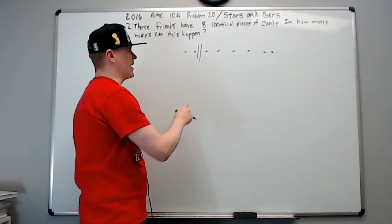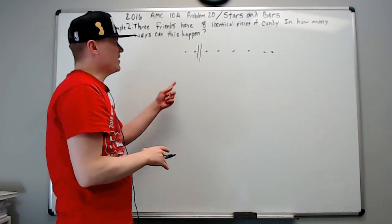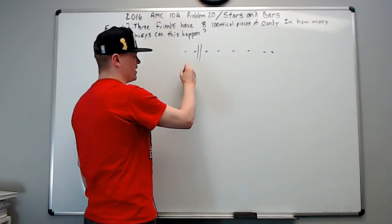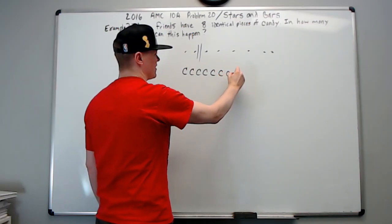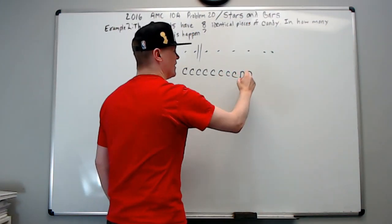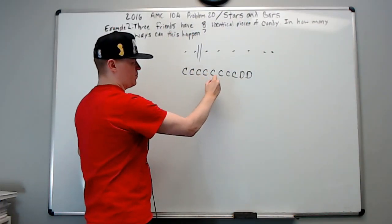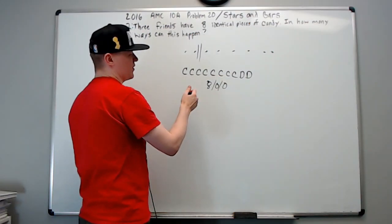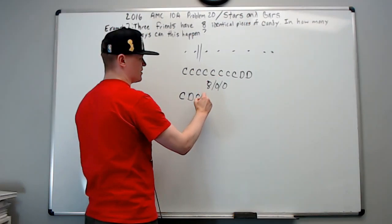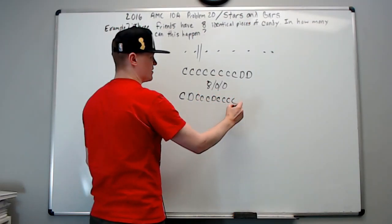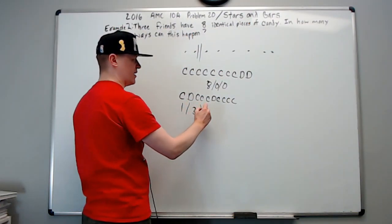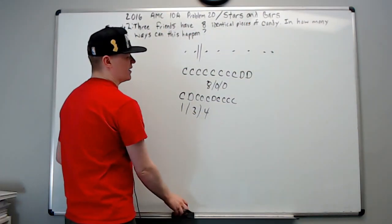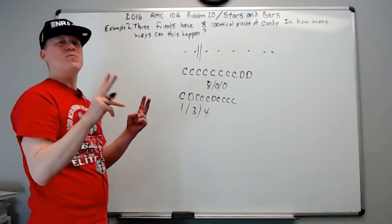Since two dividers can now share a gap, we switch approach and represent each piece of candy as the letter C and each divider as the letter D. For example, the arrangement C, D, C, C, C, D, C, C, C, C means the first friend gets one, the second gets three, and the third gets four — a total of eight pieces.